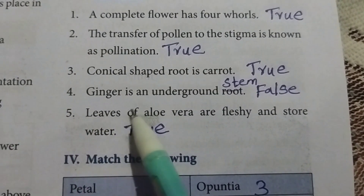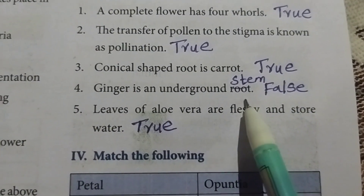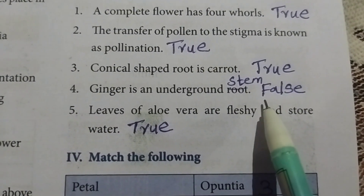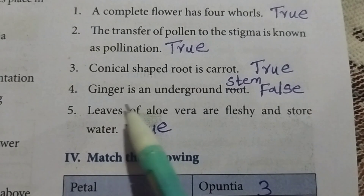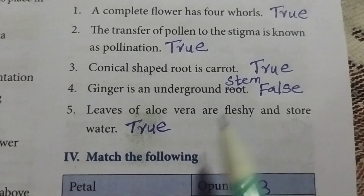Fourth one: Ginger is an underground root. The statement is false. The correct statement: Ginger is an underground stem.